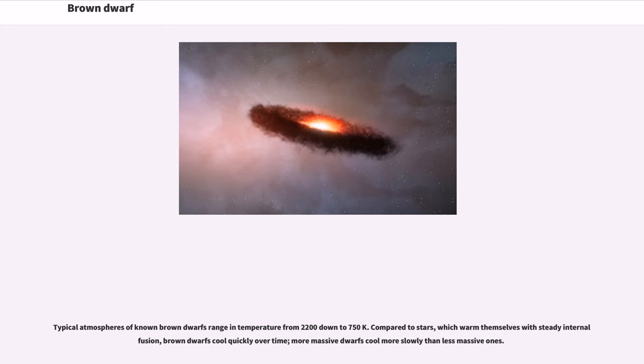Compared to stars, which warm themselves with steady internal fusion, brown dwarfs cool quickly over time. More massive dwarfs cool more slowly than less massive ones.